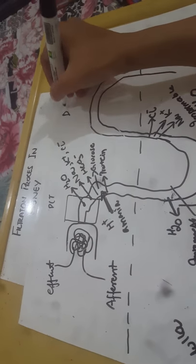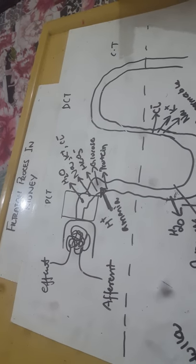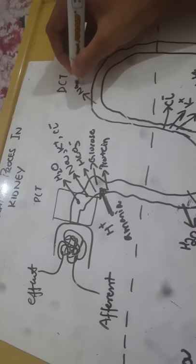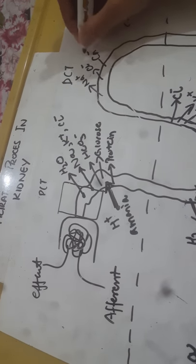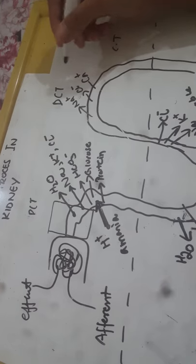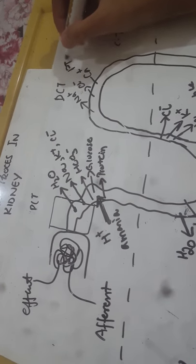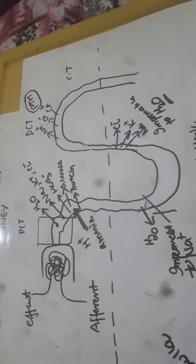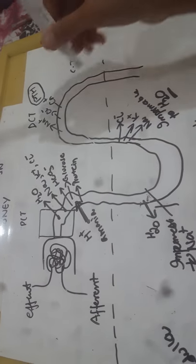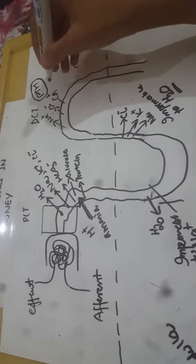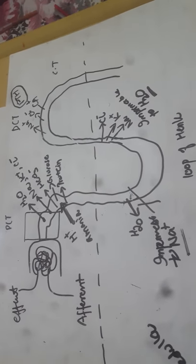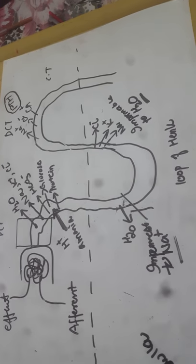Then comes the distal convoluted tubule. Here, sodium, chloride, and calcium are all reabsorbed. This is regulated by parathyroid hormone, which is why calcium is reabsorbed — if there is a deficiency of calcium, parathyroid hormone acts here. There is also conversion of vitamin D occurring in the kidney.